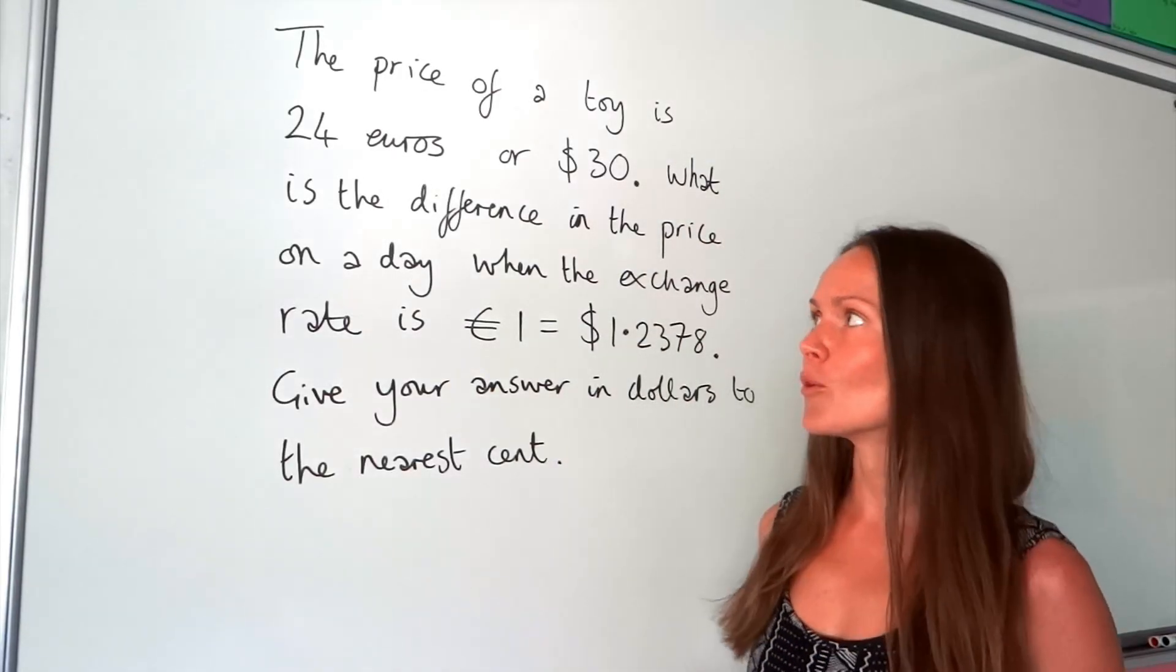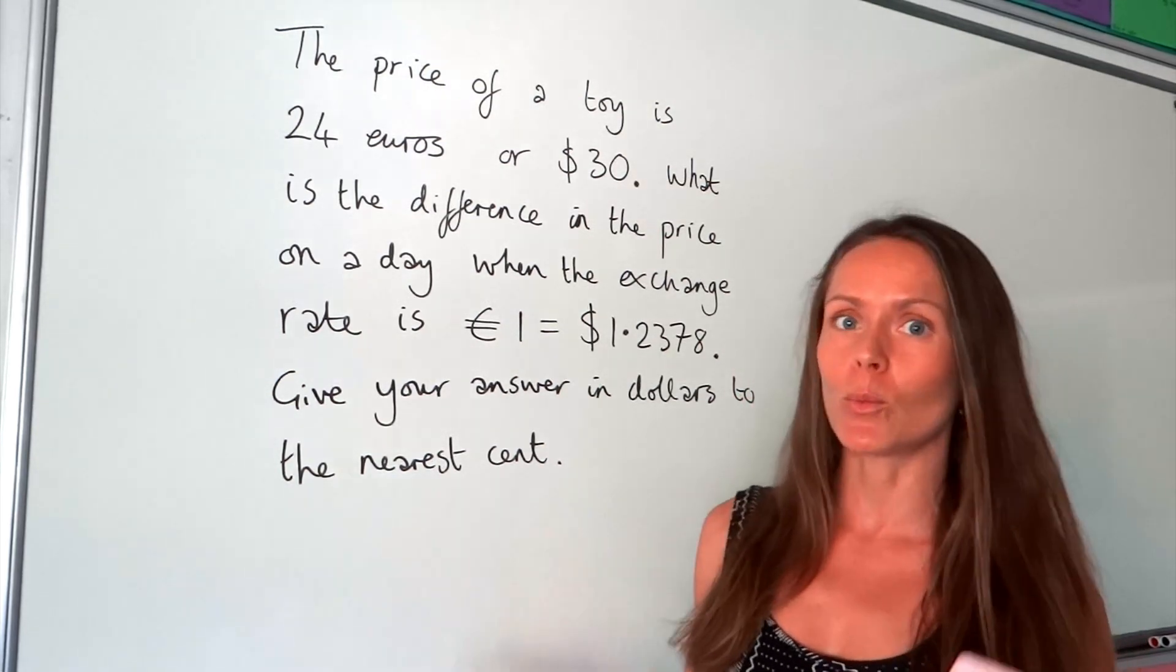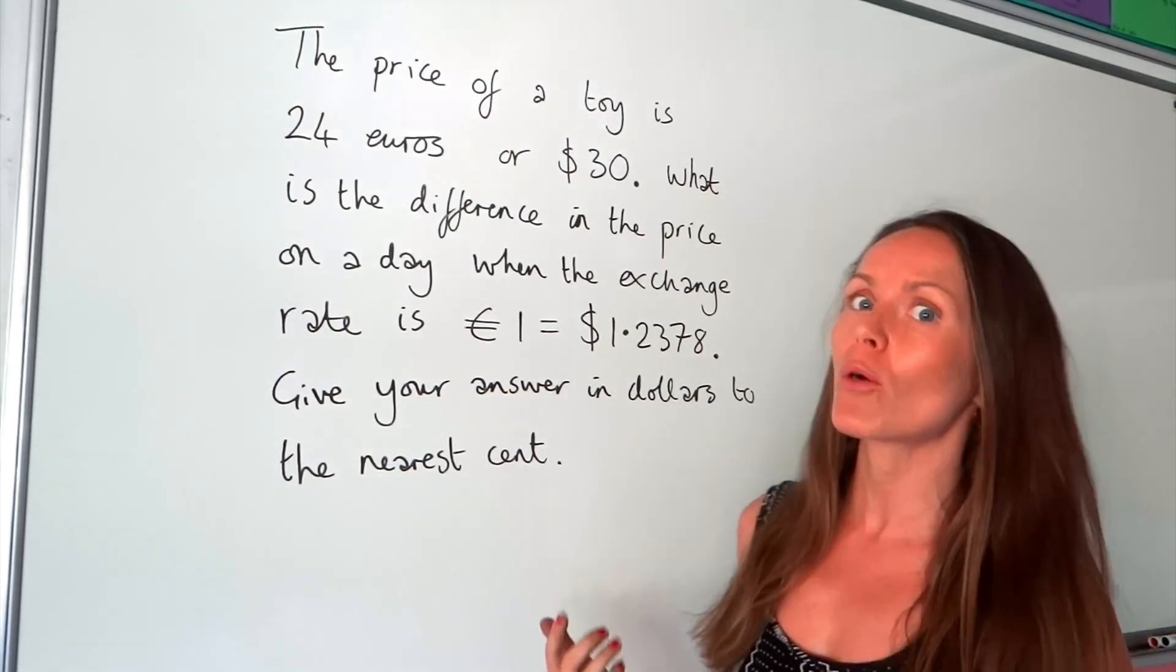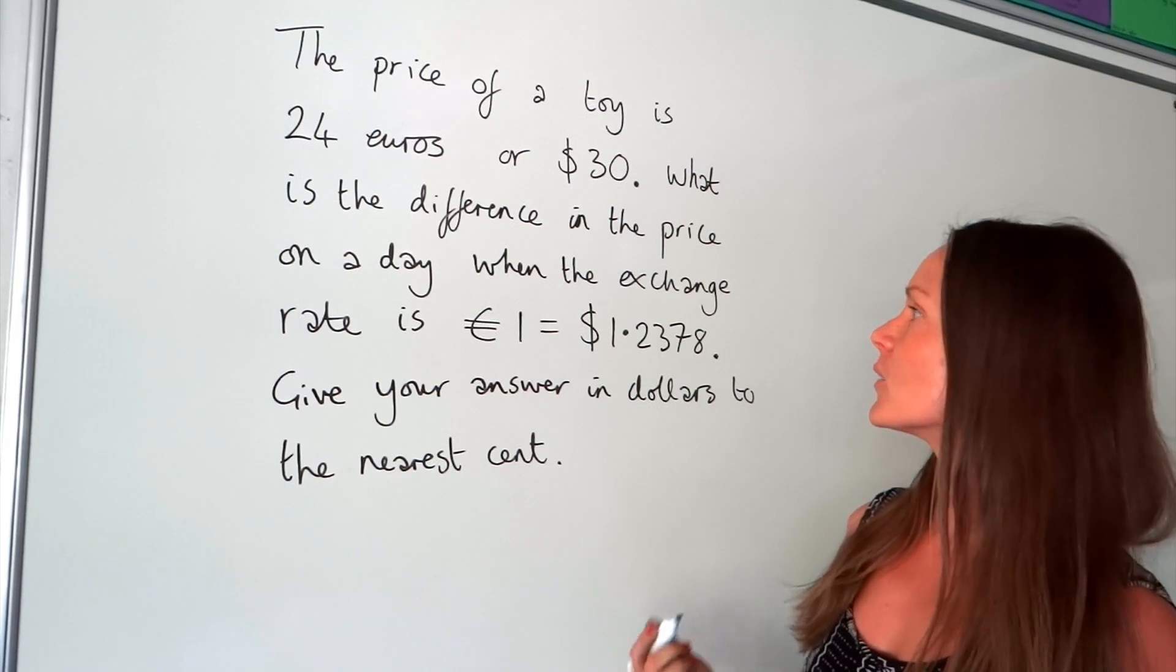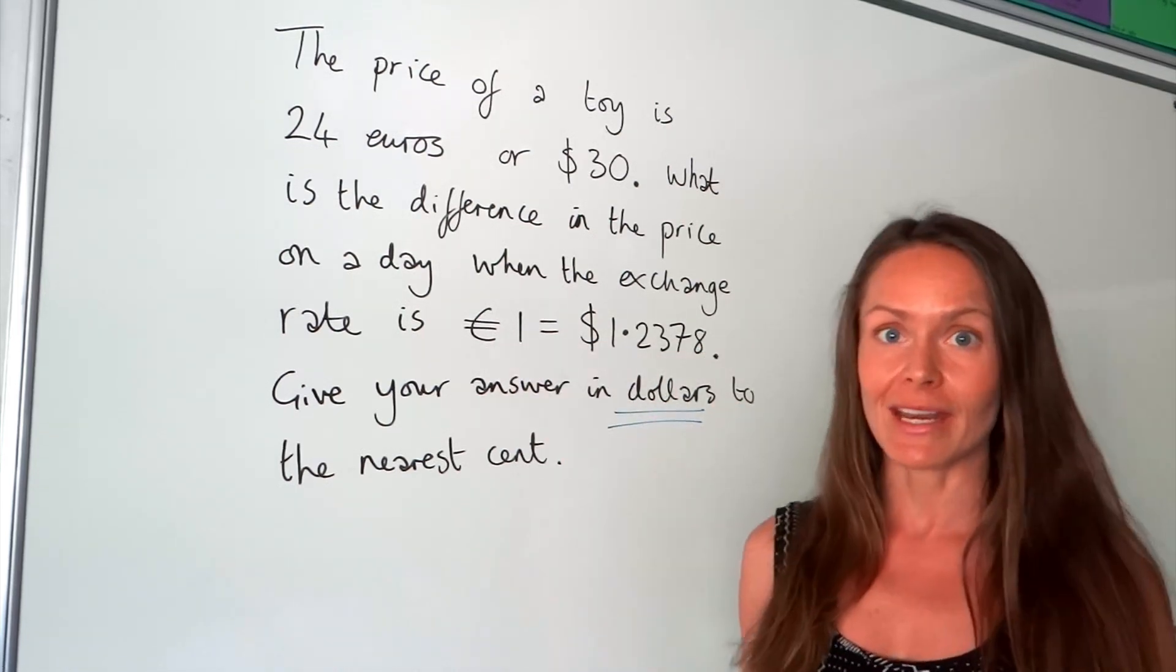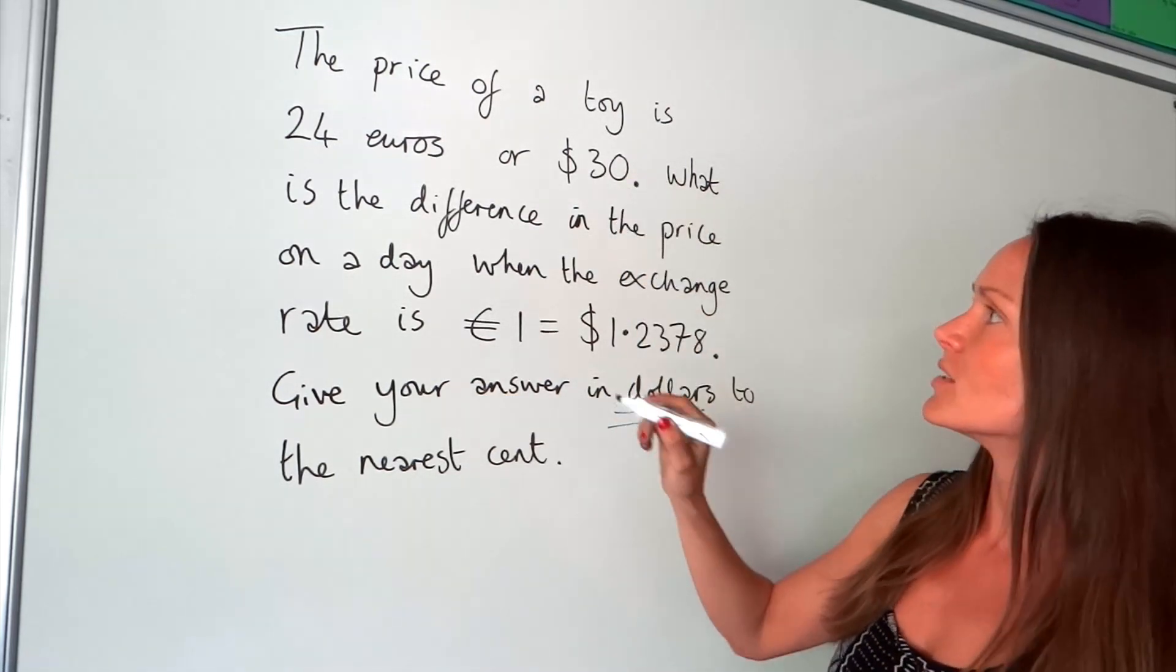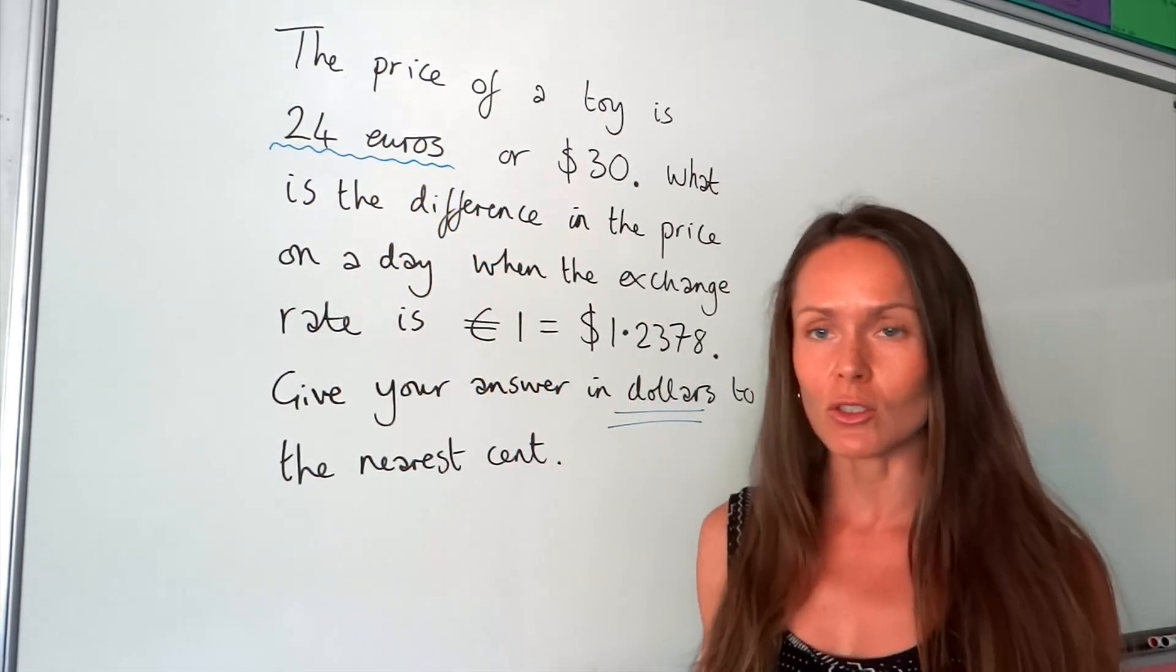In this last example, we've got a scenario where we want to buy something and we want to know which currency is best to pay in. The price of a toy is 24 euros or $30. What is the difference in the price on a day when the exchange rate is €1 = $1.2378? Give your answer in dollars to the nearest cent. We want both of our prices in dollars. Well, this one's fine. This one's already in dollars. We need to change that 24 euros into dollars. We're changing euros into dollars.